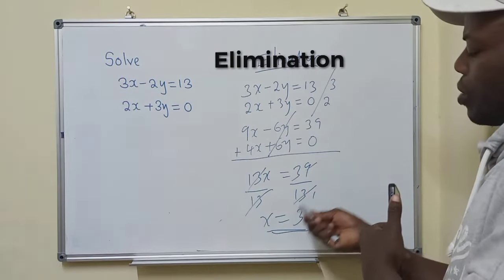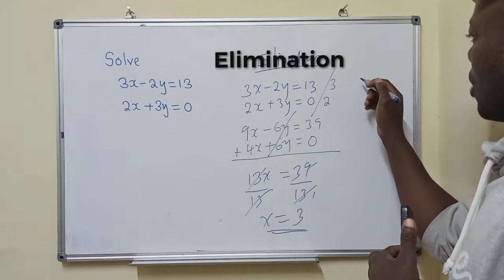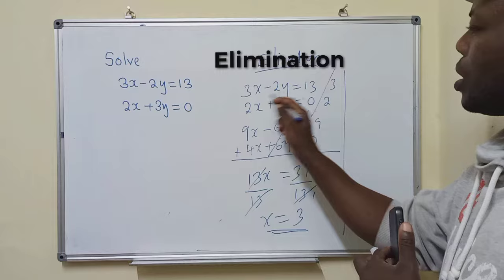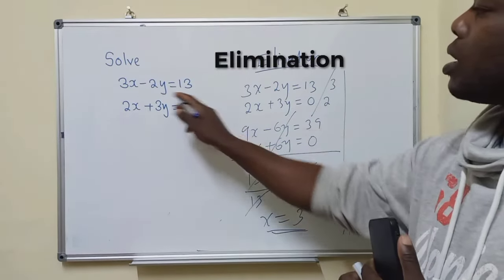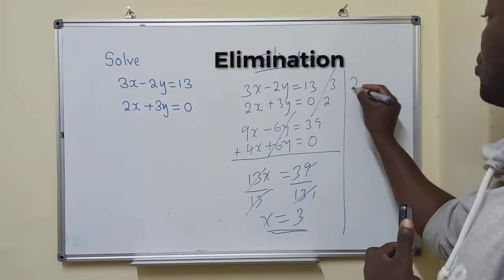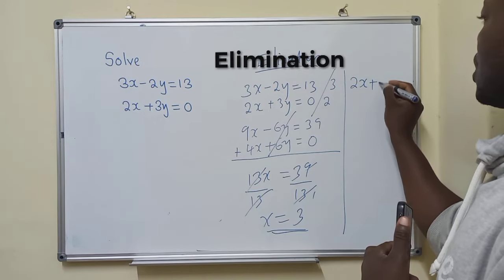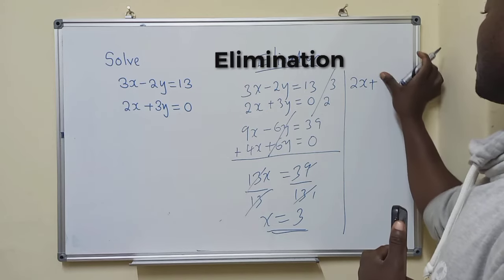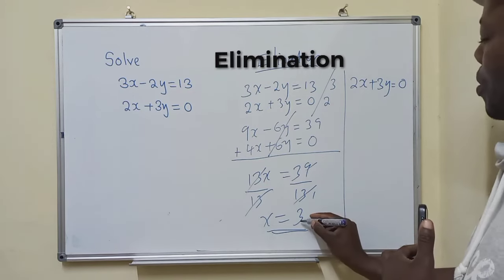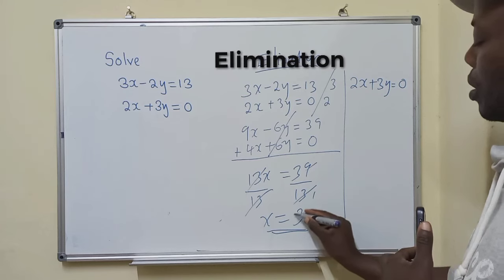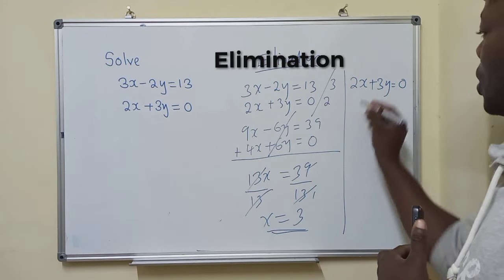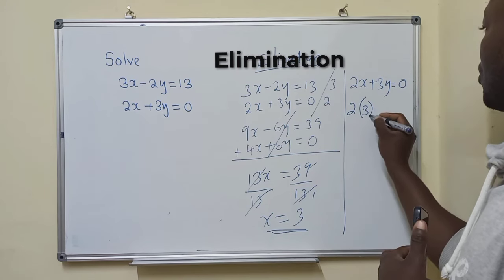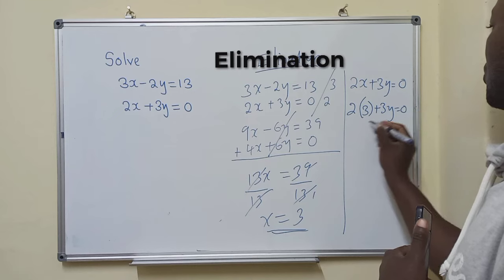So now we've found the x value. We have to find the y value. For the y value, we get any of the equations. I'll get the bottom one. So this is what we have. Actually, this is 3y. So now, we've found the value of x to be equal to 3. So we'll see: where there is x, we'll put a 3 plus 3y, which equals 0.